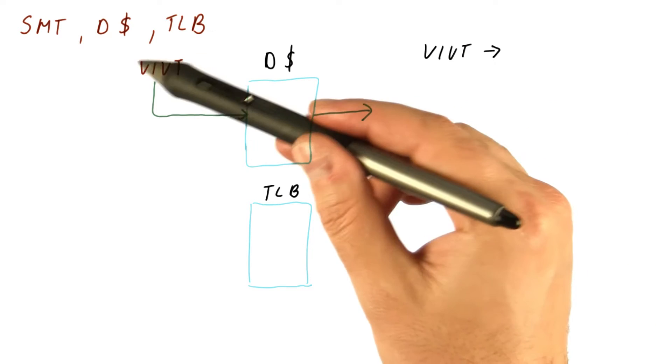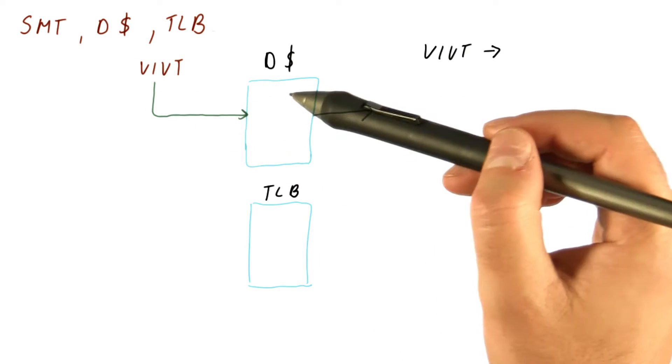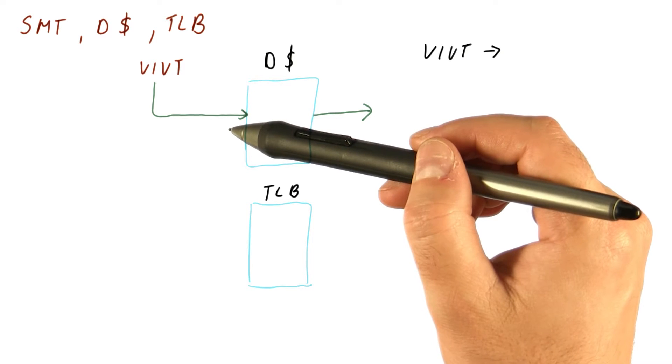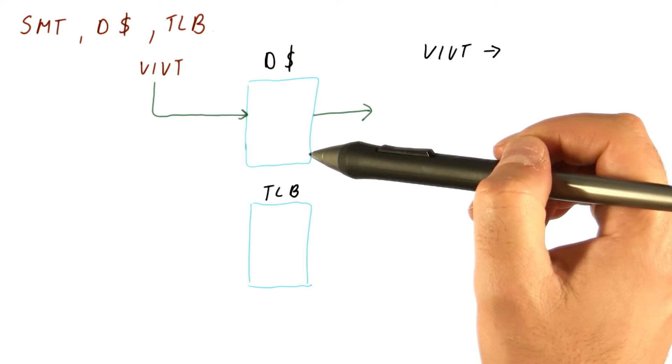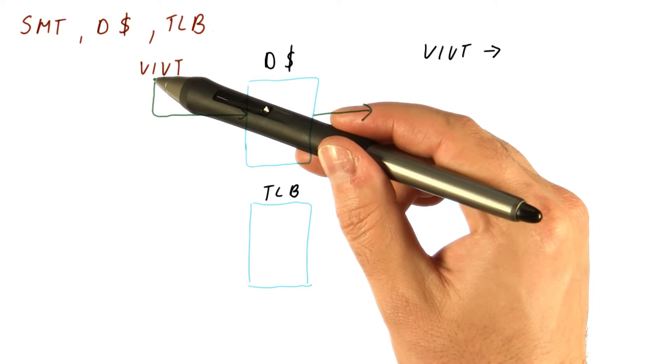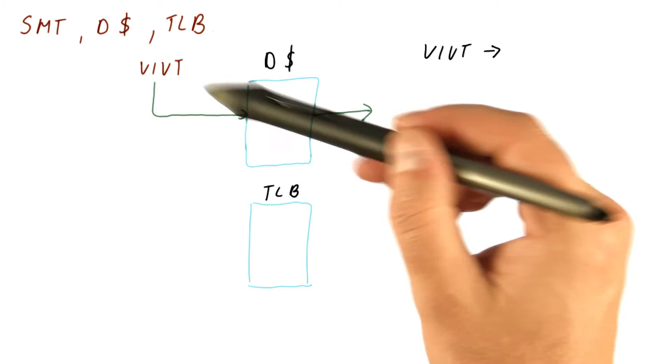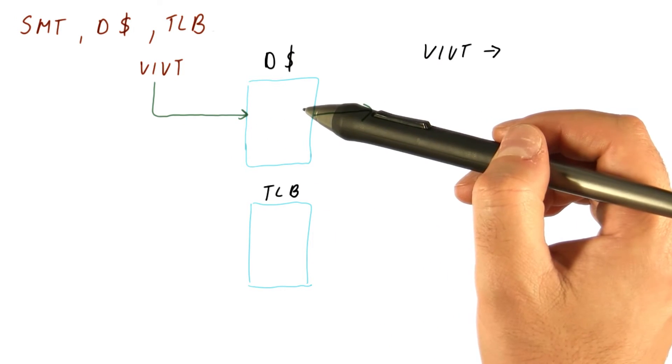Note that normally with a VI-VT cache, when we switch between threads in a coarse grain manner, we would flush the cache between them. But now that the two threads can alternate pretty much every cycle, we cannot flush the cache in between those.